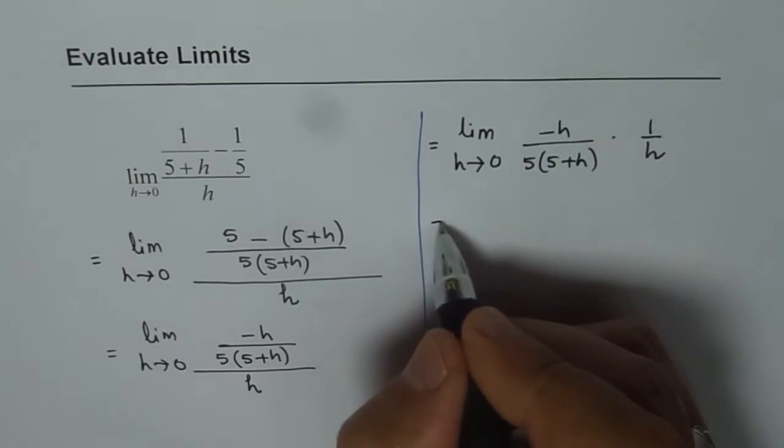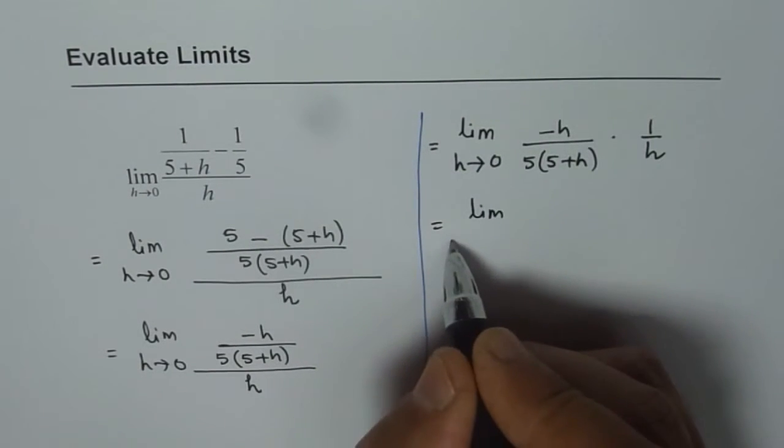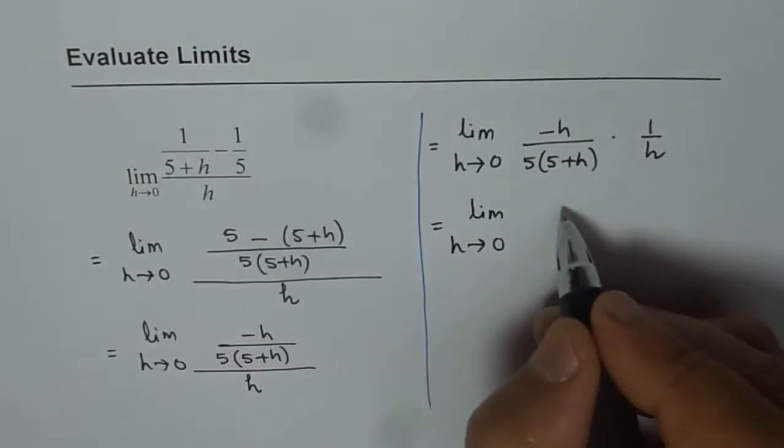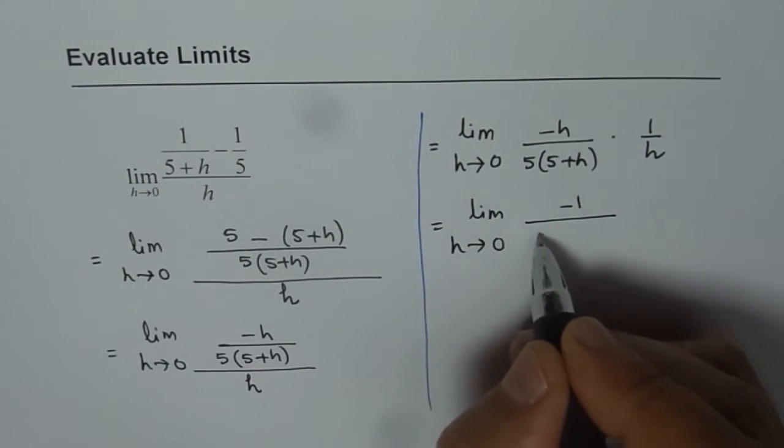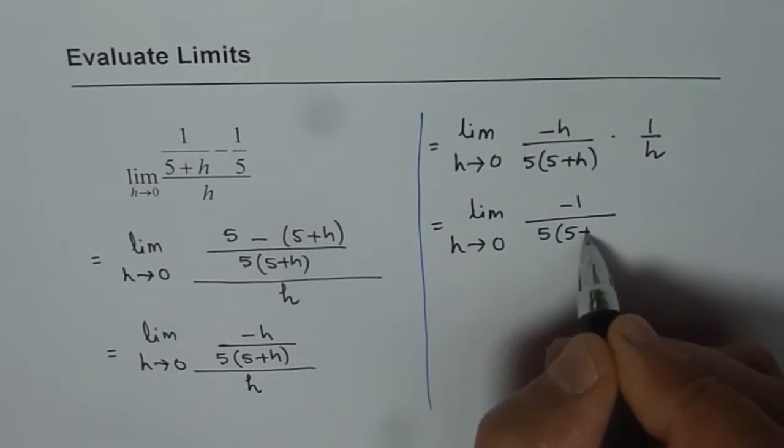So now you can cancel h. So we get limit h approaches 0, we get -1 over 5 times (5+h).